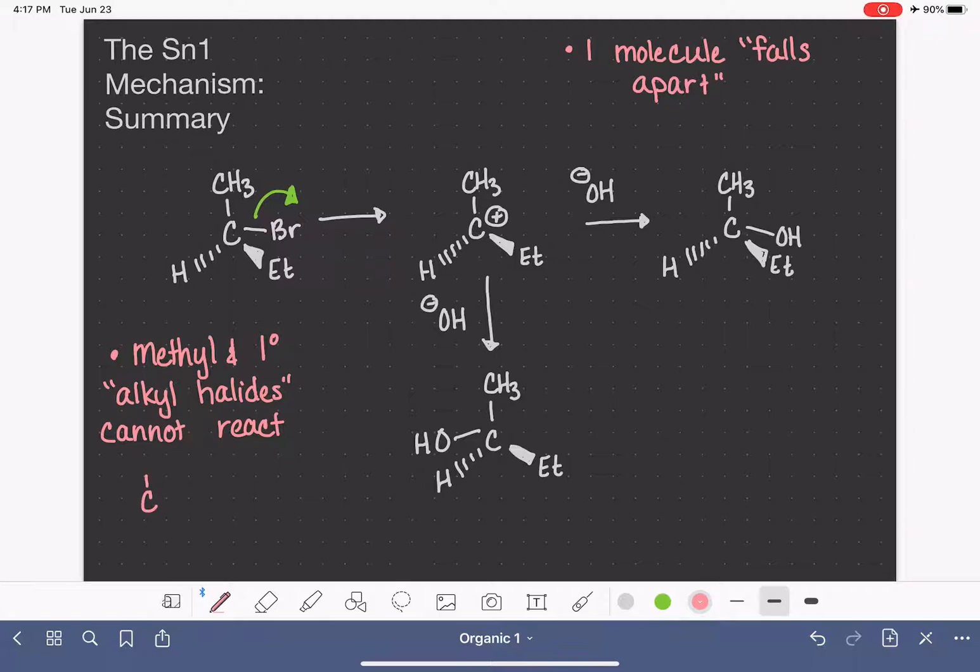The methyl and primary alkyl halides would have a format like this, where LG is referring to the leaving group. Typically a halogen, doesn't have to be. That's the methyl, and this is a primary alkyl halide. These two types of molecules will not form a stable enough carbocation, and because of that, they cannot perform the SN1 reaction.